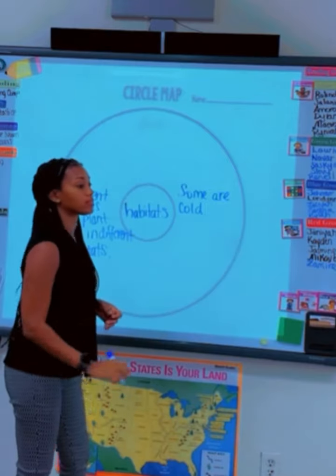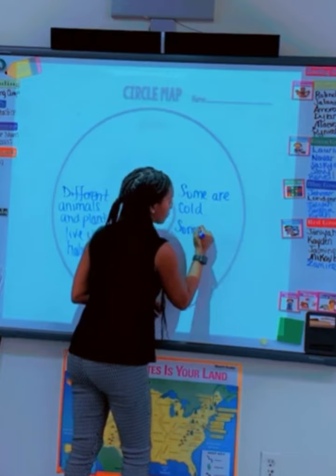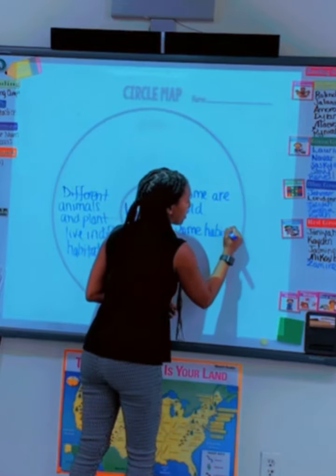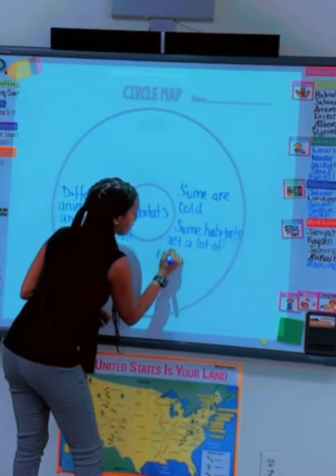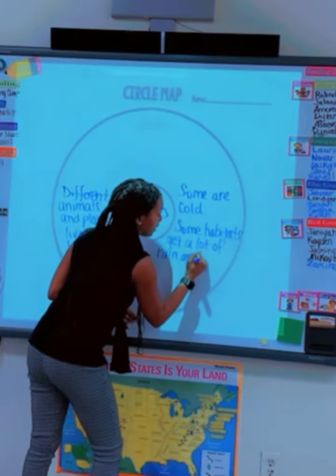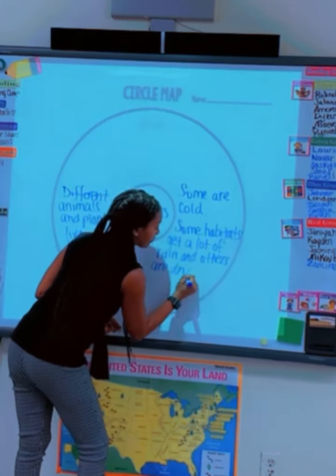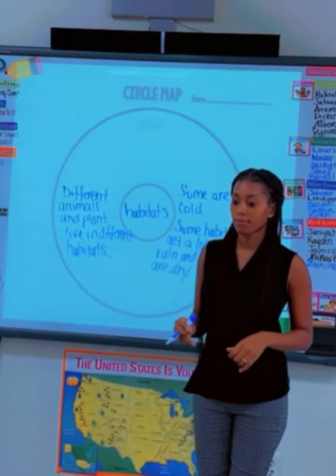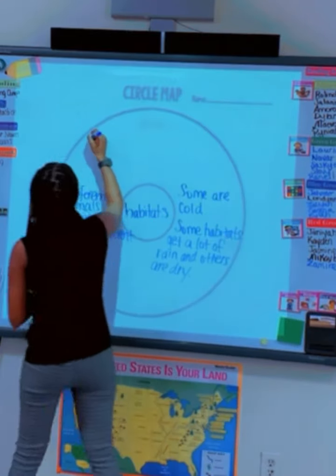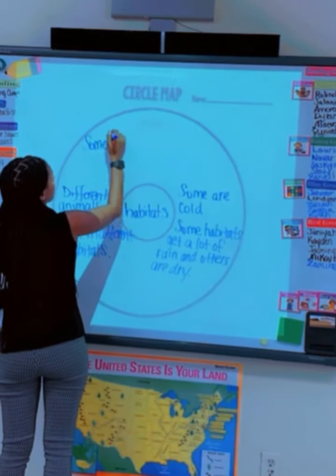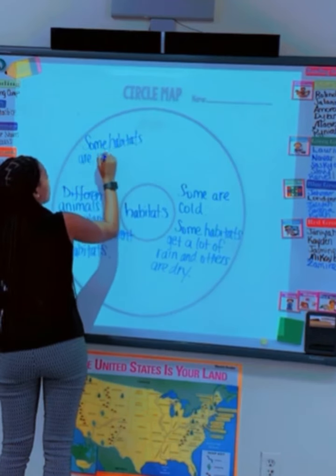What else? Yes? Some habitats get a lot of rain and others are dry. Very good. Anything else? Yes? Some habitats are underwater.